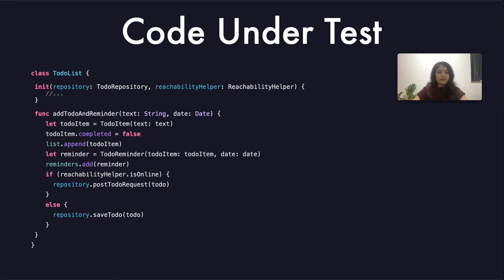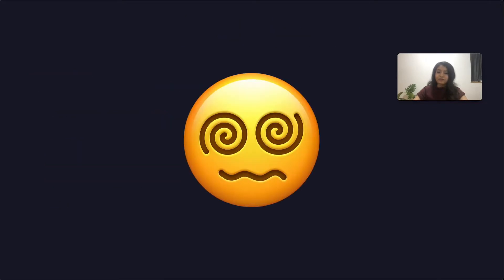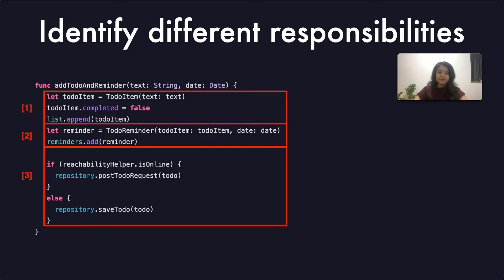When I think about how I can write tests for this kind of code, it's clear that it has too many responsibilities — in other words, it violates the single responsibility principle. According to this principle, a piece of code should have one and only one responsibility and therefore a single outcome.